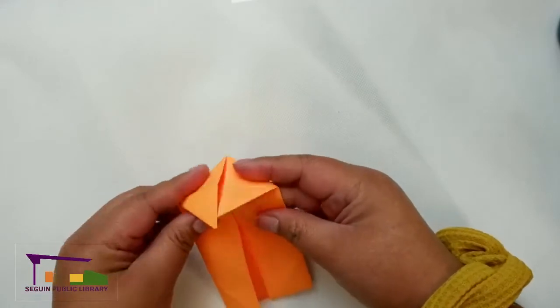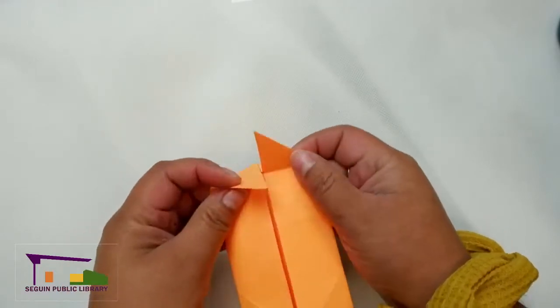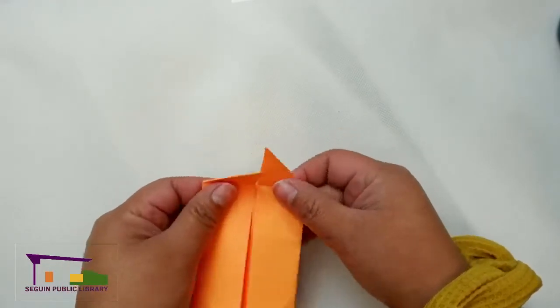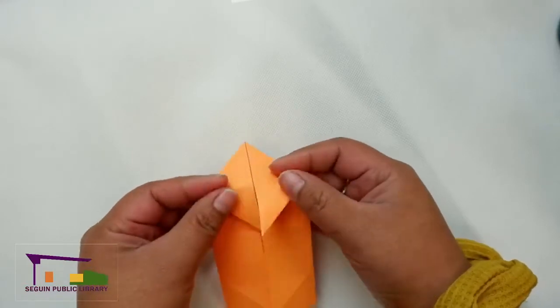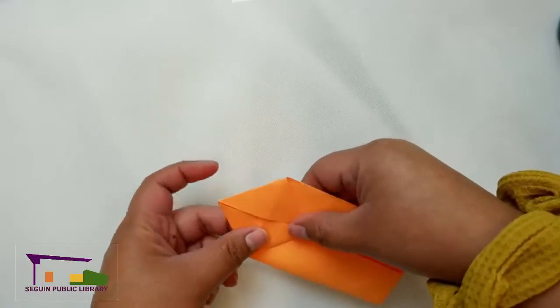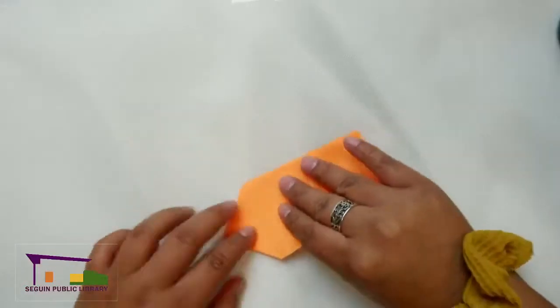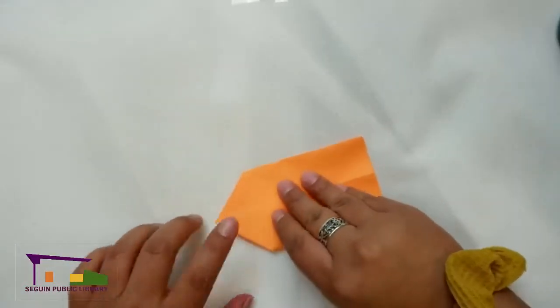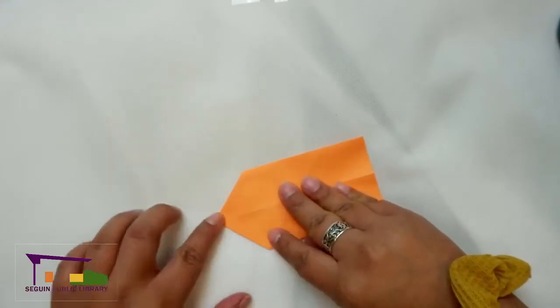So now you'll remember in our bunny tutorial, these were used as the ears and we started with those up. This time we are starting with the nose end up and we're going to change the shape of our fox's face. We're going to flip it over and do the same step we did with the bunny, but this time instead of doing it with the ears we're doing it with the nose.